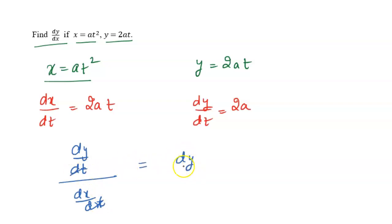So we will get here dy over dx equals dy over dt is 2a upon dx over dt is 2at.